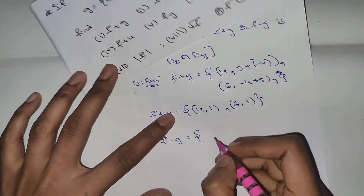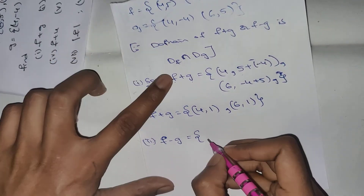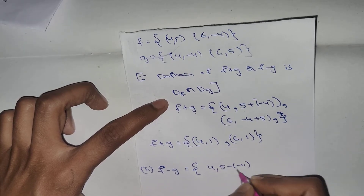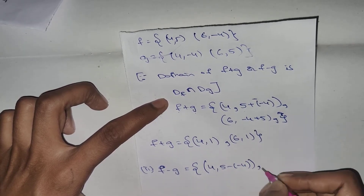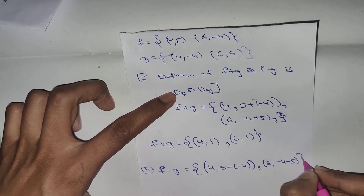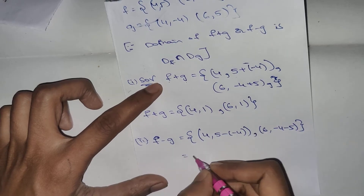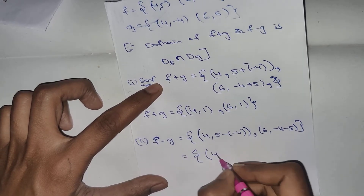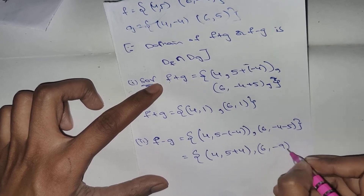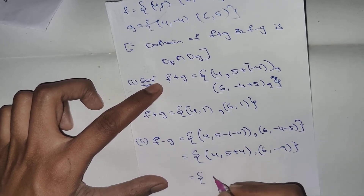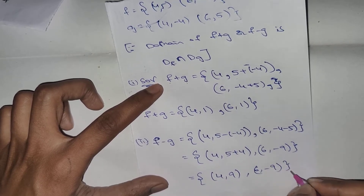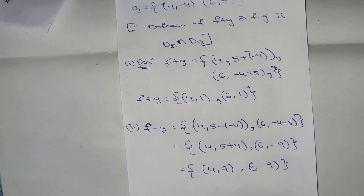Now, we have to add f minus g. We have to add 2 values: f, 5 minus (−4). 6, minus 4, minus 5. So, (4, 5 plus 4), (6, minus 9). Answer: (4, 9), (6, minus 9). This is the answer f minus g.